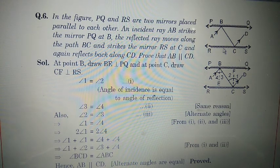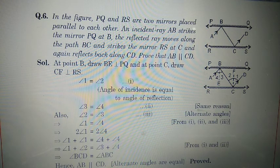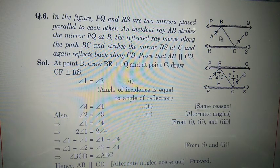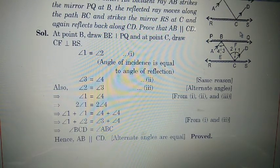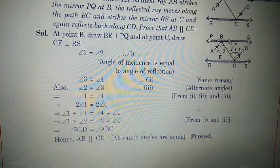Now students, last sum of Exercise 6.2. In this figure, PQ and RS are two mirrors placed parallel to each other. An incident ray strikes mirror PQ at point B, reflects and then strikes mirror RS at point C, and reflects back along CD. Prove that AB is parallel to CD. For construction: draw BE perpendicular to PQ and CF perpendicular to RS.